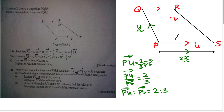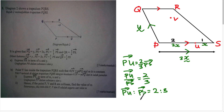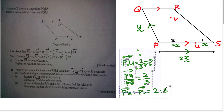From this ratio, I know PU is 2 and PS is 3, so the remaining segment US is 1. Since PS equals 3x, PU equals 2x and US equals x. It's very important to write it in this pattern — it makes everything much easier.